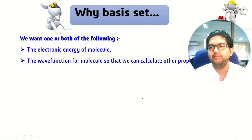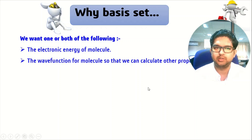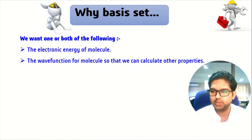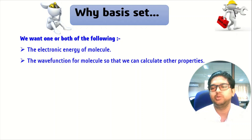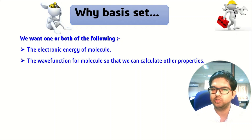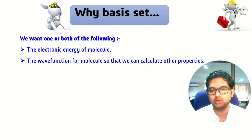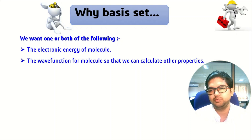Why do we use a basis set? If you want to find out the electronic energy of a molecule, you have to use a basis set. If you want to find out the wave function of a molecule so that you can find out different properties like NMR, IR, etc., in those cases we need a basis set to find out the energy and other properties of a molecule.